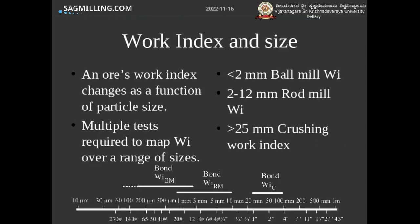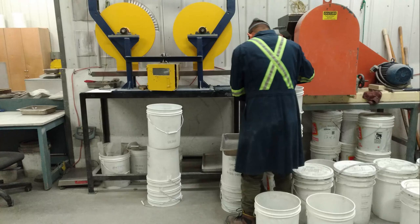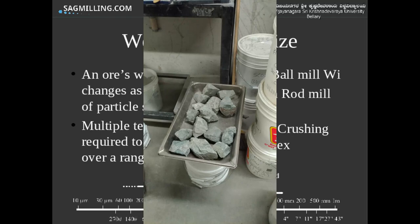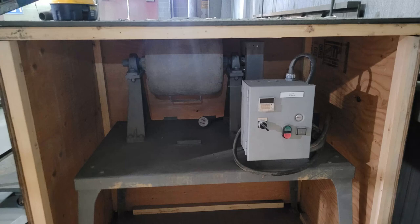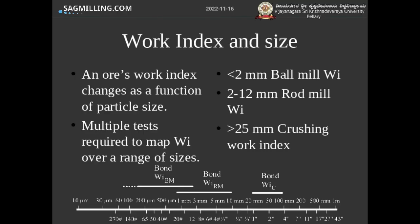There are actually five work indexes, and a separate YouTube video specifically describes all five. Here we'll talk about the three measured in the laboratory: the crushing work index test, which operates on rocks around 75 to 100 millimeters; the rod mill work index, which takes samples approximately 10 millimeters in size down to around a millimeter; and the Bond ball mill work index test, which goes from about 2.4 millimeters down to commonly between about 75 and 200 micrometers. The fact that there are three different tests gives a clue that work index changes as a function of size.